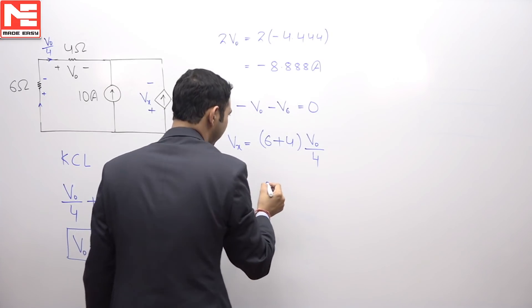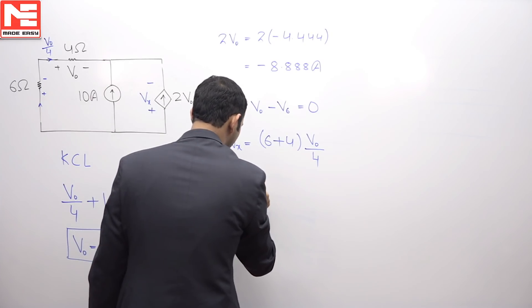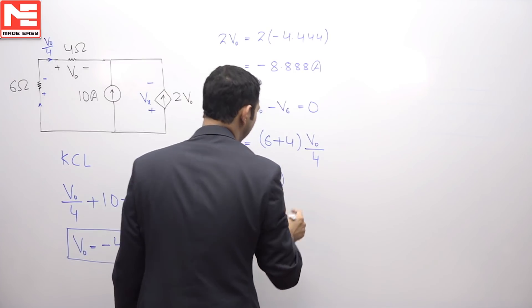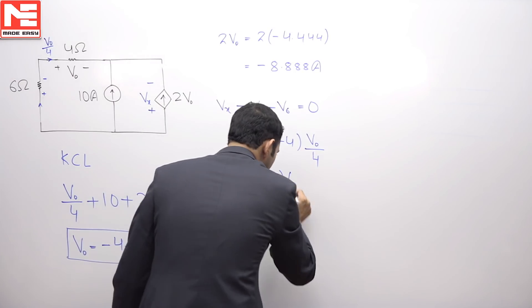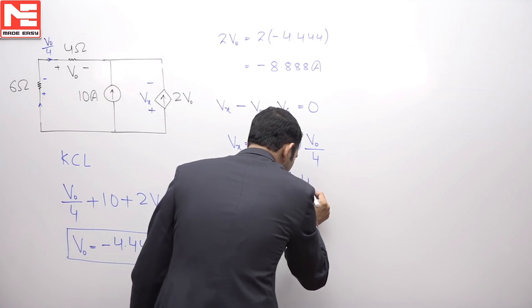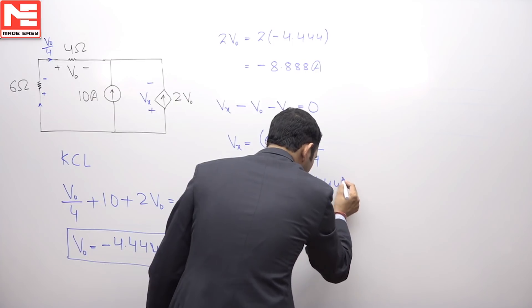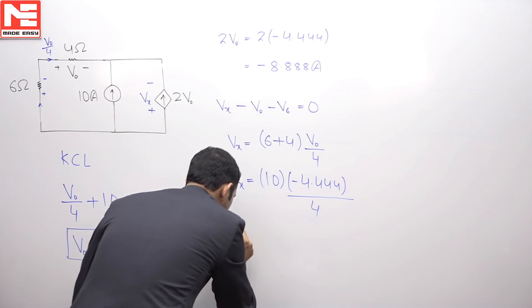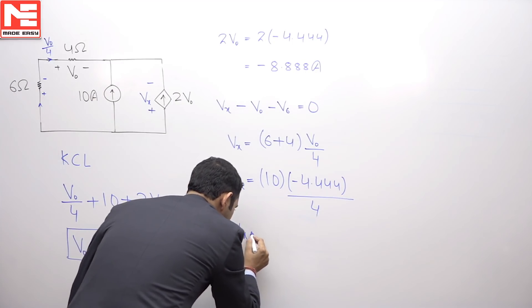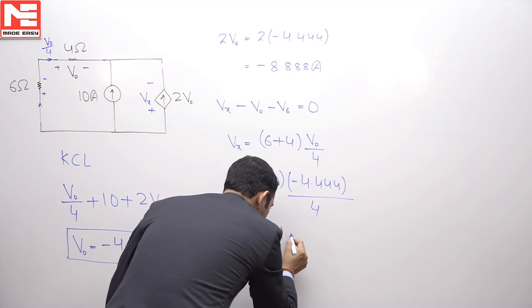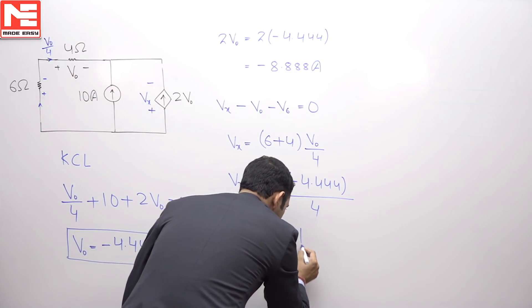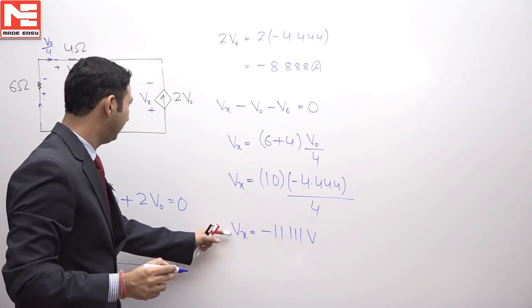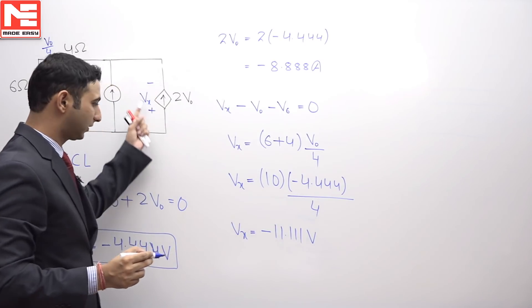Vx will be equal to 10 multiplied by V0 — that is minus 4.444 — divided by resistance 4. Hence, Vx is coming as minus 11.111 volts. So this will be the value of Vx across this one.